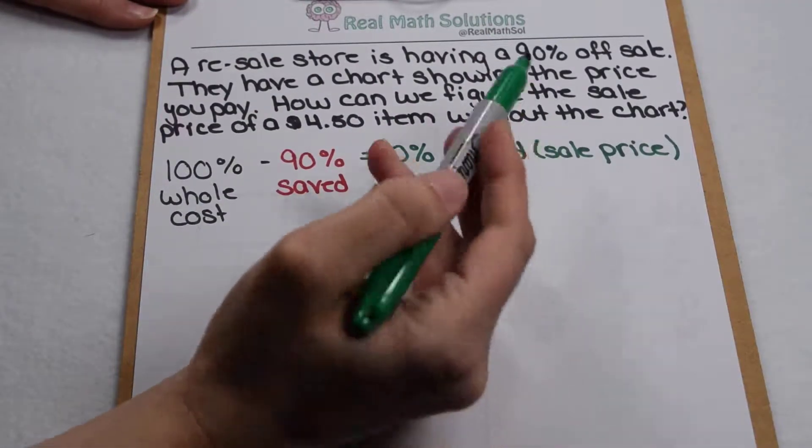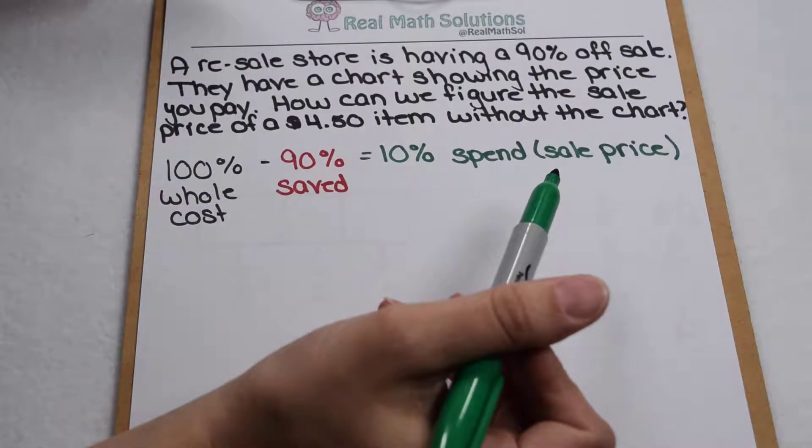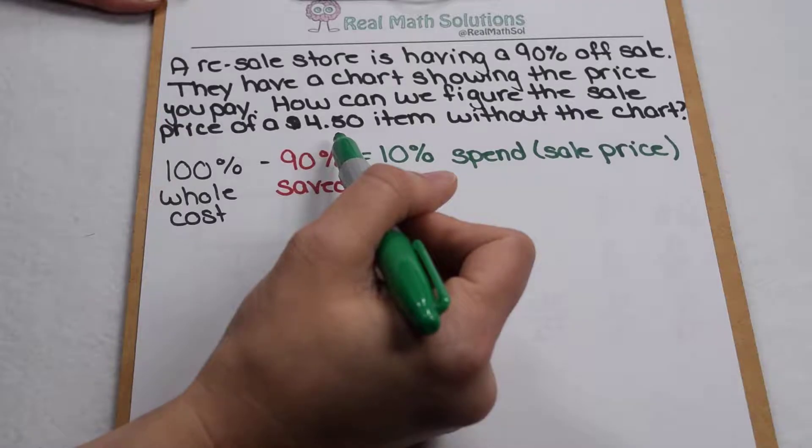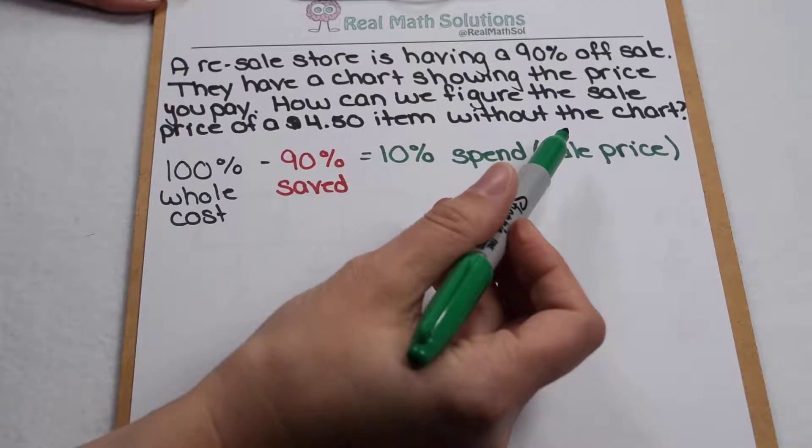A local resale store is having a 90% off clearance sale. They have a chart in store to show you how much you're going to pay when you save 90%. But what we want to know is how can we figure the price of a $4.50 item without consulting the chart.